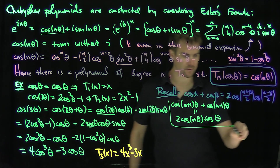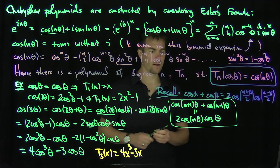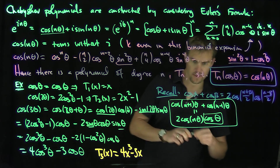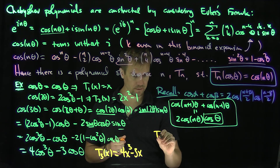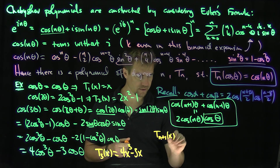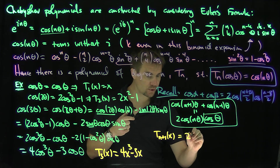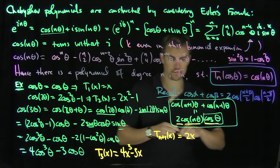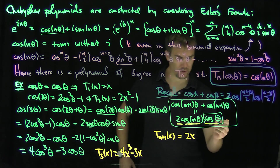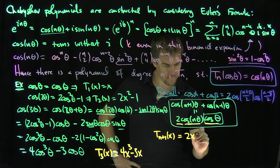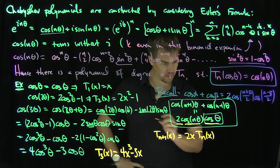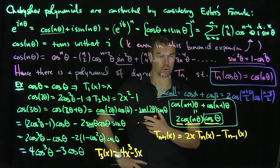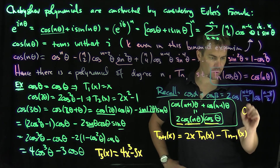This relationship gives us information about the Chebyshev polynomials directly. Setting x = cosine(theta), we get the Chebyshev recursion: T_{n+1}(x) = 2x·T_n(x) - T_{n-1}(x). This is our Chebyshev recursion formula.